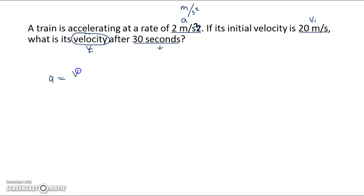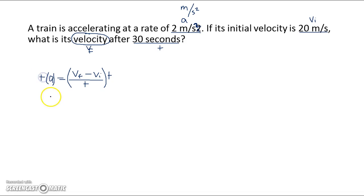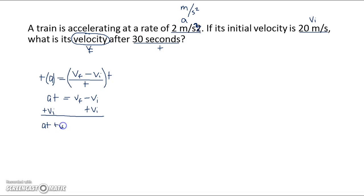Acceleration is equal to final velocity minus the initial velocity over time. So we've got to get final velocity by itself — we've got to do some rearranging. We need to get the t on the other side to get the numerator out of the fraction, so we multiply: a times t is equal to vf minus vi. Now to get vf by itself, we've got to get rid of this vi. Since it's subtracted, the opposite of subtraction is addition, so we're going to add it to both sides. That cancels out, giving us a times t plus vi, and that's all equal to vf.